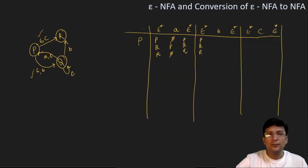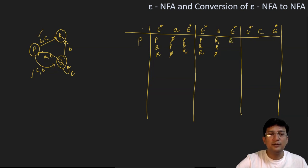The epsilon closure of p will be {p, q, r}. p on b moves to state q. And q on b moves to state r. And r on b is undefined. Now the epsilon closure of state q will be q only — it will not go to any other state. Epsilon closure of r will be only r. And epsilon closure of phi will be phi.